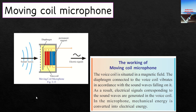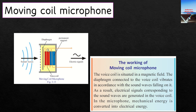The voice coil is connected to the diaphragm. When the diaphragm vibrates, the voice coil starts vibrating — similar to the electromagnetic induction experiment where a coil moves in a magnetic field with a stationary magnet. In a magnetic field, a conductor is vibrated, induced EMF is generated, and that is passed as electrical signals. With the help of other devices, it is converted back into sound and we can hear it.